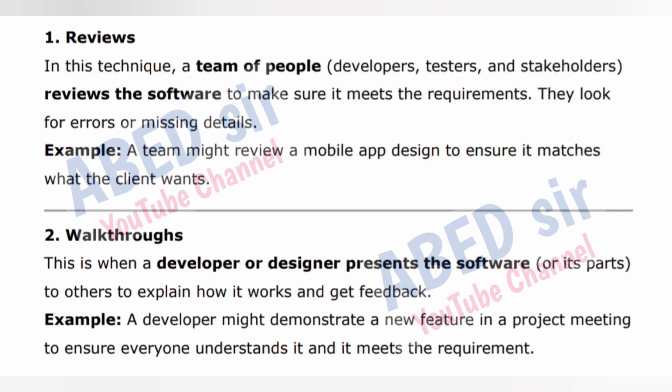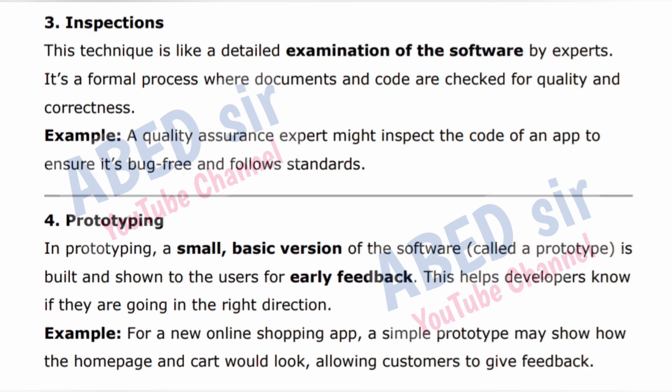Technique 2 — Walkthroughs: this is when a developer or designer presents the software or its parts to others to explain how it works and get feedback. Example: a developer might demonstrate a new feature in a project meeting to ensure everyone understands it and it meets the requirement. Technique 3 — Inspections: this technique is like a detailed examination of the software by experts. It's a formal process where documents and code are checked for quality and correctness. Example: a quality assurance expert might inspect the code of an app to ensure it's bug-free and follows standards.